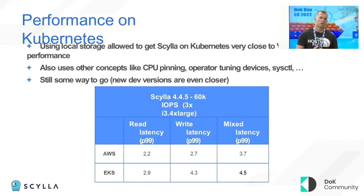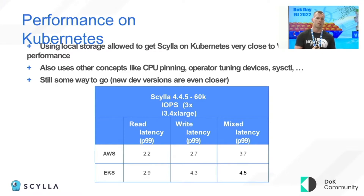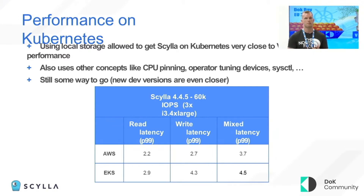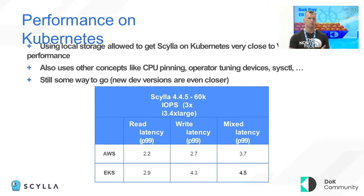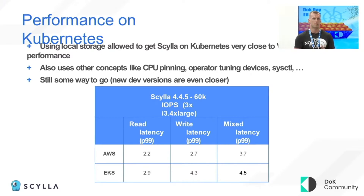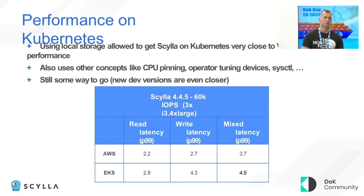As a show of how close you can get to VM performance for your database, I took one of our performance runs which has three nodes, runs 60,000 IOPS against it, and if you look at the read latency — the P99 — you can see that the AVS1 running on EC2 instances, just a regular install of Scylla, takes 2.2 milliseconds. The EKS1 is just 2.9, and our new dev versions are still getting closer, so you can get very close to VM, if not the same performance with Kubernetes.